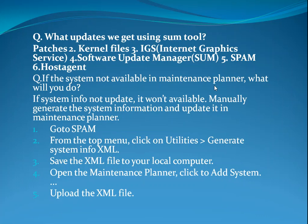If the system is not available in Maintenance Planner, what will you do? If the system info is not updated, it won't be available. Manually generate the system information and update it in Maintenance Planner. Follow these steps: Go to SPAM, from the top menu click Utilities, then Generate System Info XML. Save the XML file to your local computer. Open the Maintenance Planner, click Add System, and upload the XML. This is the procedure to update it in the Maintenance Planner.